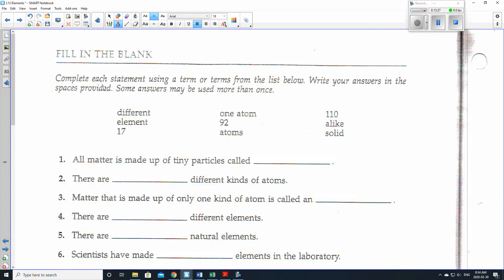So now what I want you to do is complete each statement using the term or terms from below. Write your answers in the spaces provided. Some answers may be used more than once. So here are the words. Different. Element. 17. One atom. And I'm going to, oh, sorry, everyone. I'm going to change these numbers. So rather than 17, let's do 26. So let's do 26. 92 still stays the same, but I have to also change 110 to 118. Sorry about that. Atoms, 118 alike and solid.